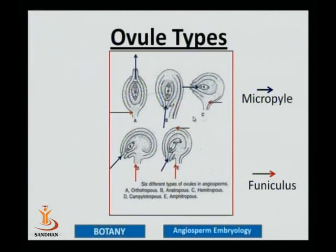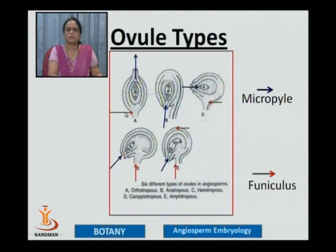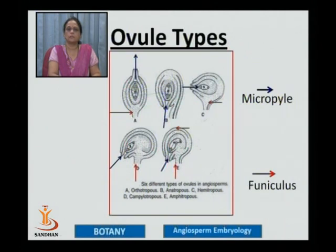In different flowering plants, the ovule types are also different. Embryologists have classified ovules on the basis of the position of the micropylar region and the funiculus. The micropyle is a small pore for the entry of the pollen tube, and the funiculus is the stalk of the ovule. In some plants, the ovule becomes straight so that the micropylar region and the funiculus lie in a straight line — such an ovule is known as an orthotropous ovule.